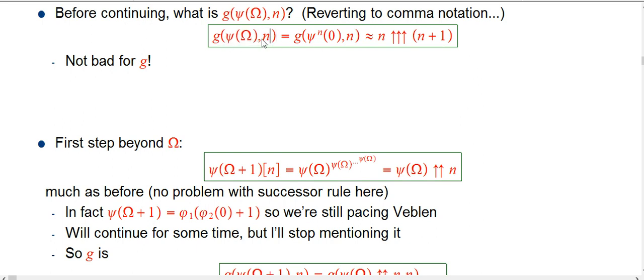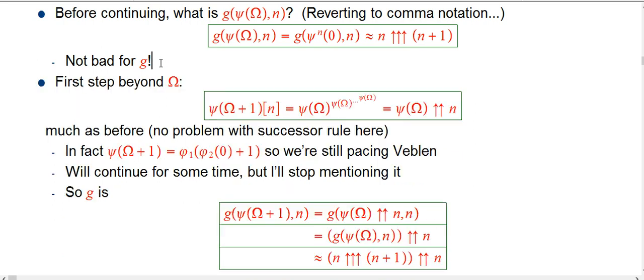So we know that g of psi of omega, this first new value of psi, is a pretty decent value. Let me talk about the first step beyond that. We could of course do psi of omega plus 1. I want to point out that there's no problem with successor rule here. It's exactly just psi of omega to the psi of omega etc., psi of omega double up n. And in fact, if you write that out with the Veblen notation, it's exactly what the limit of that is, exactly how we go up in the Veblen notation as well.